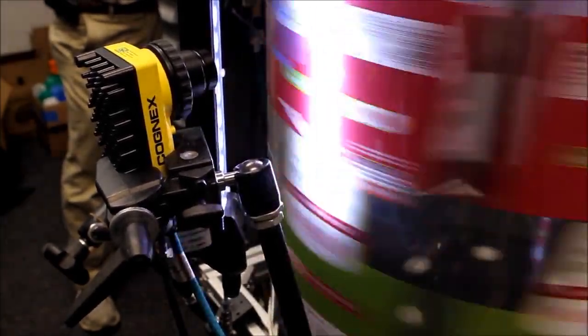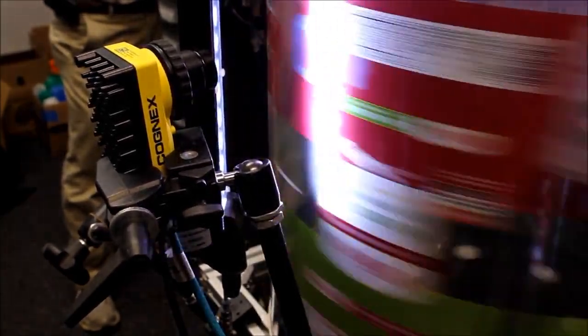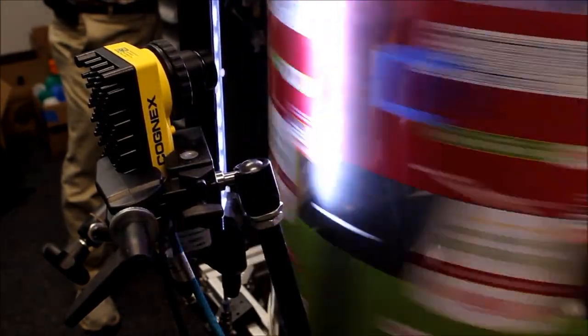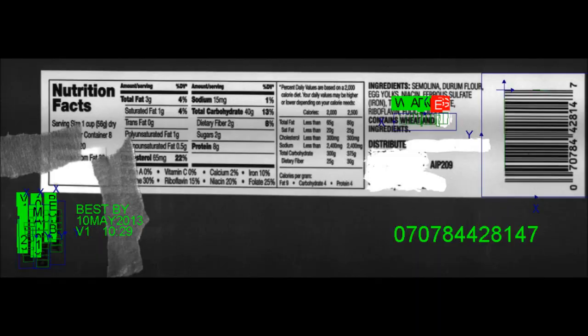The second method of inspection utilizes a line scan camera, which is able to build a high resolution image across the entire label by scanning the label as it passes by.